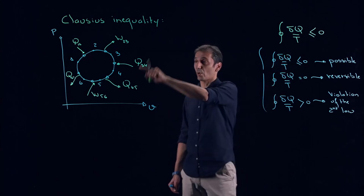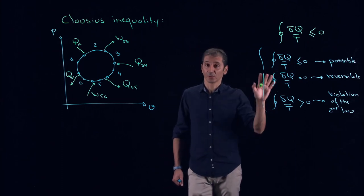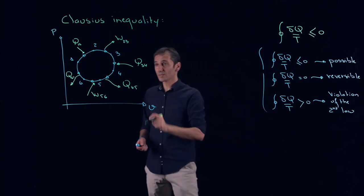Because it's telling me that depending on this calculation here, delta Q over T, over all the cycle, I can say if it's possible, reversible, or go home.